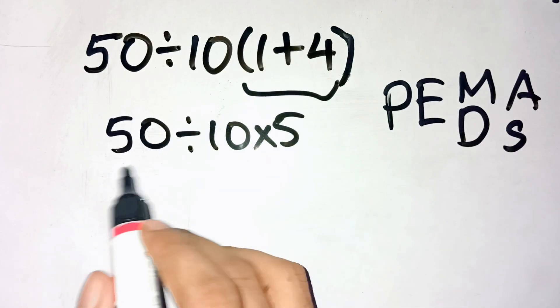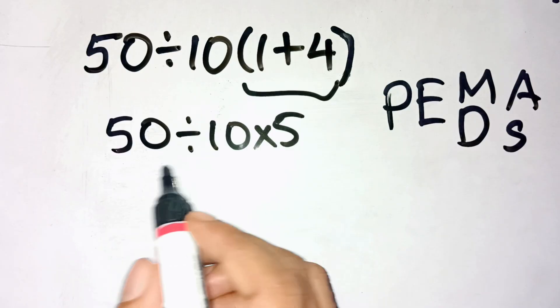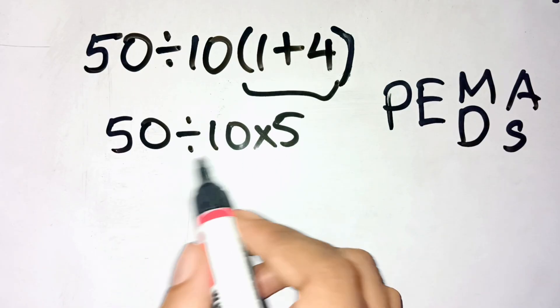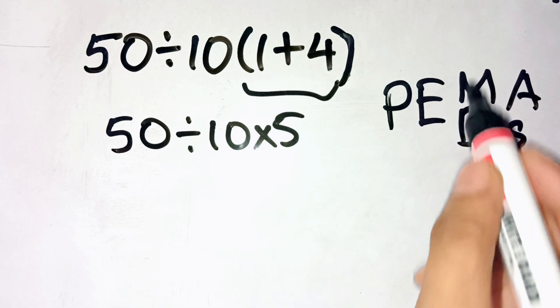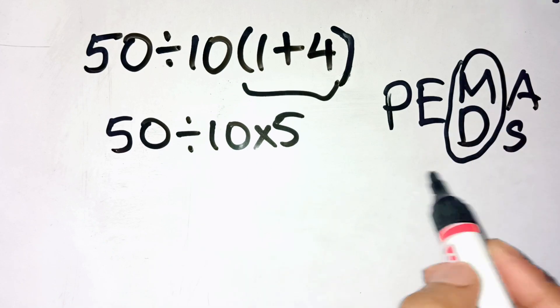Here's where the confusion starts. Most people think they should multiply 10 by 5 first because it's written next to it. But nope, multiplication and division have equal priority. You always go left to right.